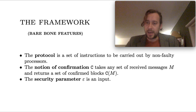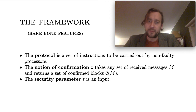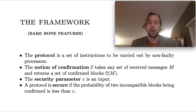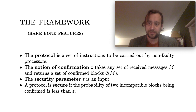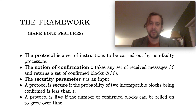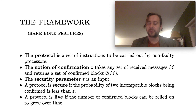An input to the protocol is the security parameter epsilon, which you can think of as bounding the probability of there being an error as you're carrying out the protocol. A protocol is secure if the probability of two incompatible blocks being confirmed is less than epsilon. A protocol is live if the number of confirmed blocks can be relied on to grow over time.